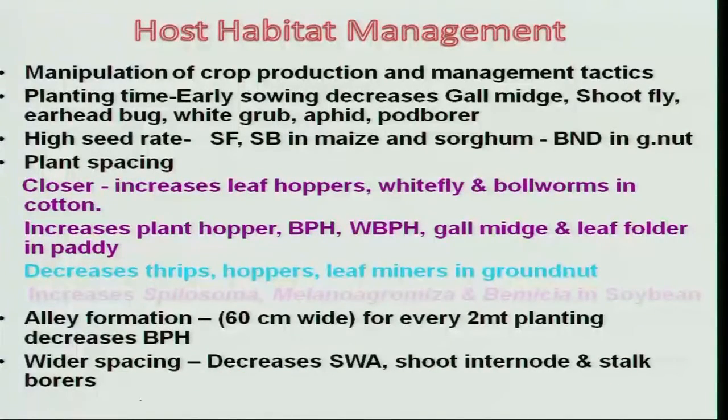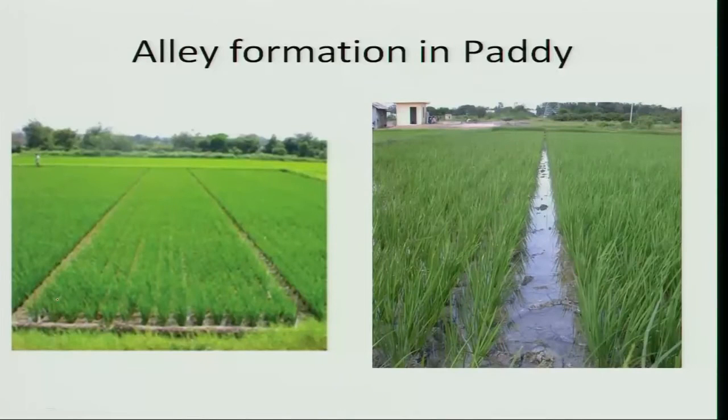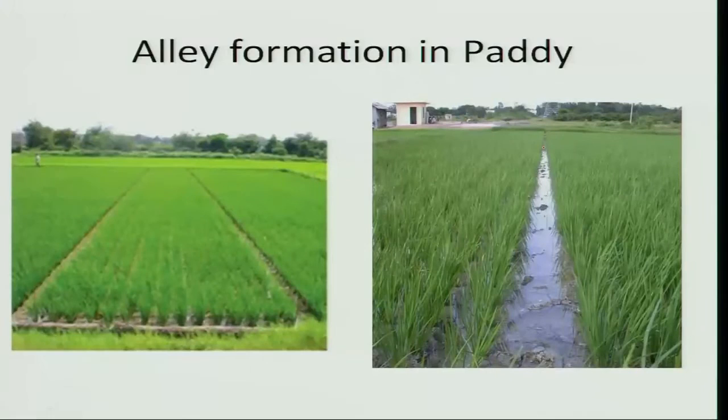Another eco-friendly method is alley cropping, which involves leaving one row empty. This helps particularly in paddy to reduce brown plant hopper (BPH) population considerably. By leaving one row empty, it reduces the microclimate to a considerable extent — particularly, the relative humidity is reduced. Thereby, the BPH population reduces its egg-laying and egg-hatching, automatically leading to a reduction in incidence. We will take other eco-friendly methods in the next class.